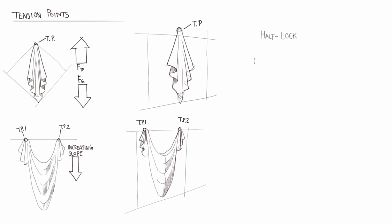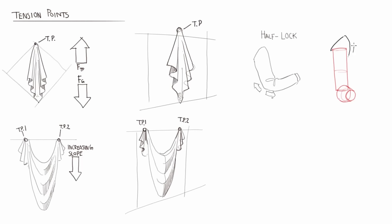One of the more confusing folds is the half-lock. This fold occurs anytime one side of the piece of fabric is compressed and the opposite is stretched, as is typical in the bending of the elbow and the knee. If we look at this fold in perspective, we see that the compressed side has a U-shaped depression, and often the top part of the fabric will fold over onto the bottom half.